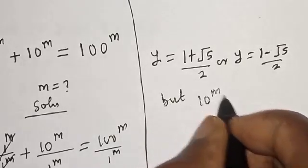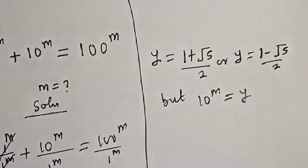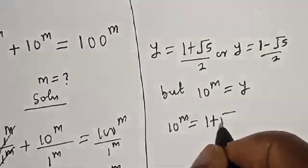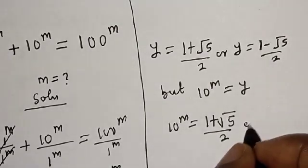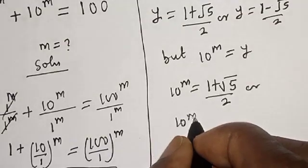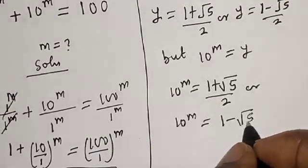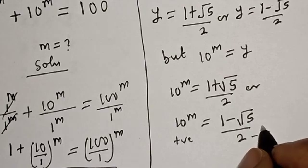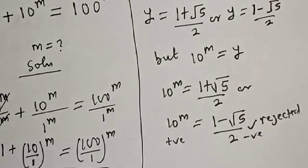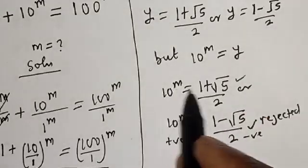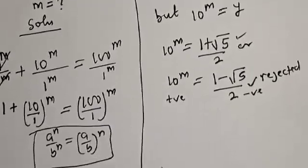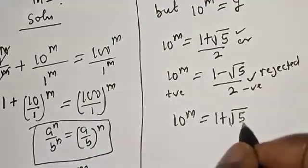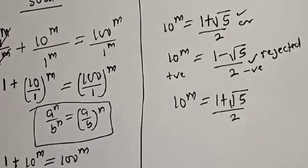Substituting back, 10 raised to power m equals (1 plus root 5) over 2, or 10 raised to power m equals (1 minus root 5) over 2. The second solution is negative, so it is rejected. The only real solution is 10 raised to power m equals (1 plus root 5) over 2. Let's take the log of both sides.